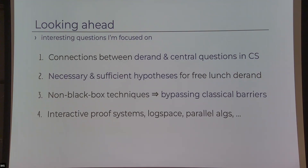A couple of interesting directions I'm currently working on: First, connections — trying to understand why de-randomization is so important in theoretical computer science, by driving new connections between de-randomization and other questions using the non-black-box approach. Second, finding the necessary and sufficient hypotheses for free-lunch theorems — the current hypotheses are too strong. These non-black-box techniques allow bypassing several classical barriers, and the entire paradigm naturally extends to de-randomization in other settings: interactive proof systems, memory-limited machines, parallel machines, and other complexity classes.